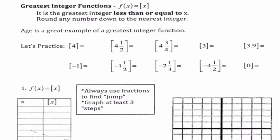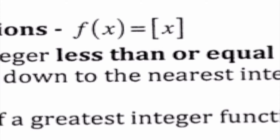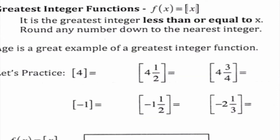Our notation for greatest integer functions — we will either see it like this where it says f of x equals with these brackets, or sometimes we will see it with brackets that look like absolute value symbols. It just really depends on the notation of the particular book or notes we're looking at. What this is telling me is f of x equals the greatest integer of x — specifically, the greatest integer less than or equal to x.